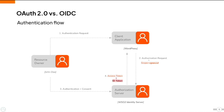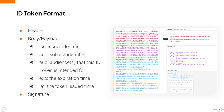This is the second attribute that makes a difference in the flow. The ID token is a JSON Web Token which contains user information. Here is a sample ID token. As you can see, it has three parts: the header, the body, and the signature.